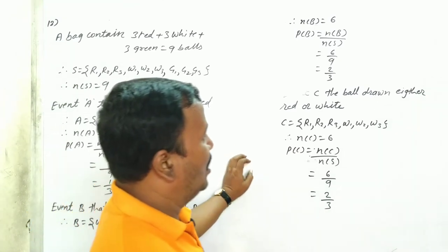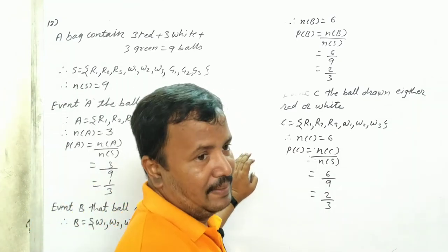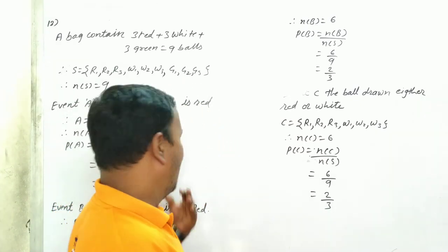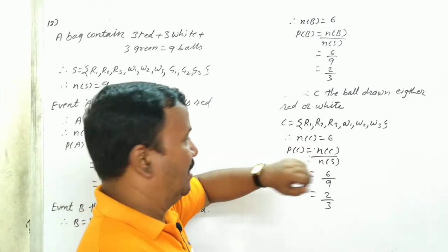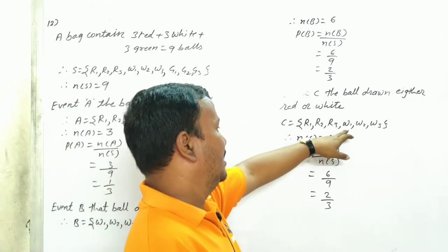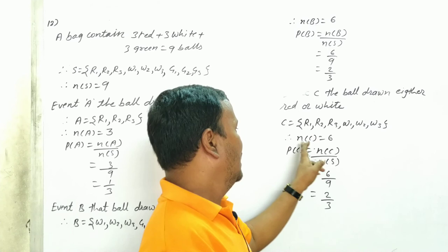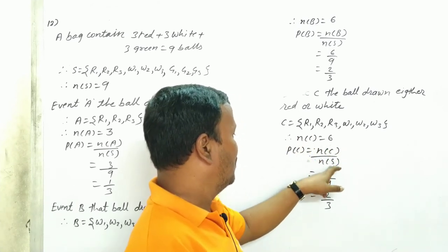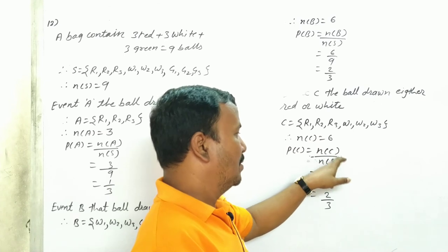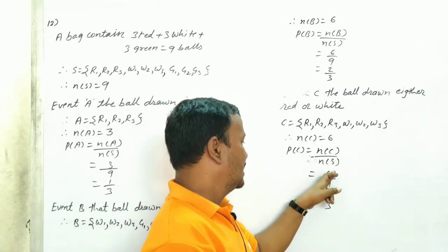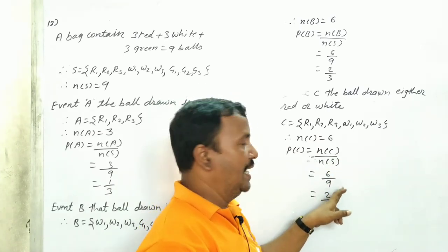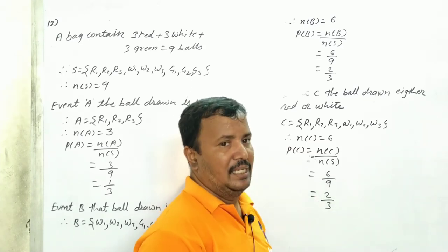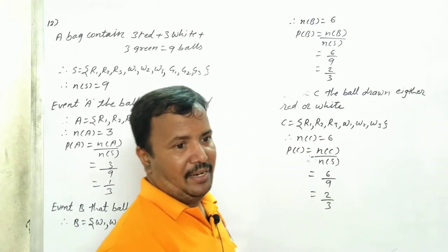Event C: the ball drawn is either red or white. So C includes all red and white balls: {R1, R2, R3, W1, W2, W3}. Number of C is equal to 6. Probability of C is equal to number of C upon number of S, that is 6 upon 9, which equals 2 upon 3. Understood everyone?